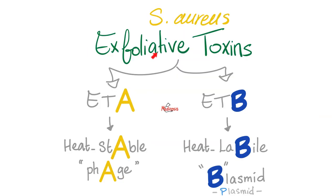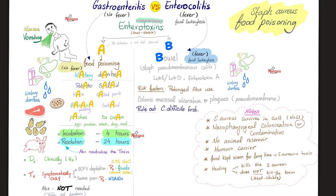When it comes to Staph aureus toxins, we have exfoliative toxins, for example. Exfoliative toxin A is heat stable, but exfoliative toxin B is heat labile. Next, Staph aureus enterotoxins: enterotoxin A and enterotoxin B. The word enterotoxin means enteric — intestinal. Enterotoxin A causes food poisoning; enterotoxin B causes pseudomembranous colitis.